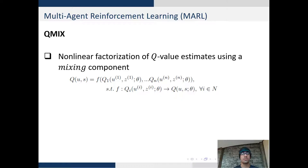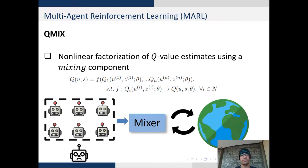To address these concerns we look at Q-mix which is a generalization of the VDN algorithm. Q-mix factorizes non-linear constraints on Q-value estimates using a mixing function. This mixing can be any non-linear mapping between individual Q-values to the joint Q-values.